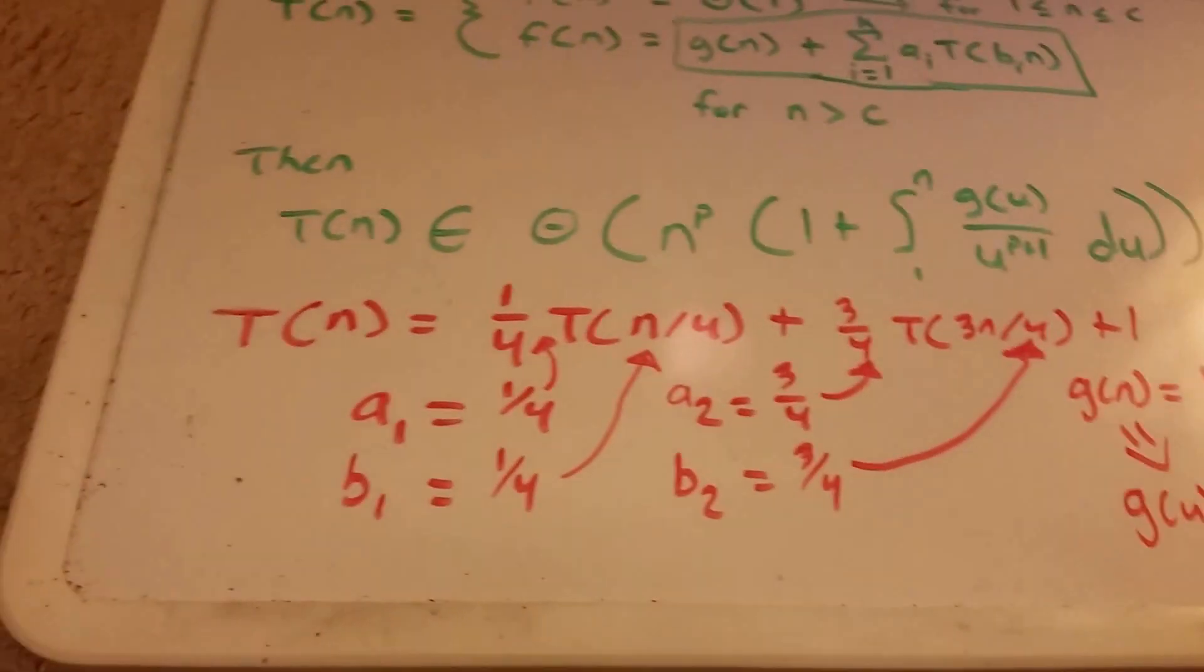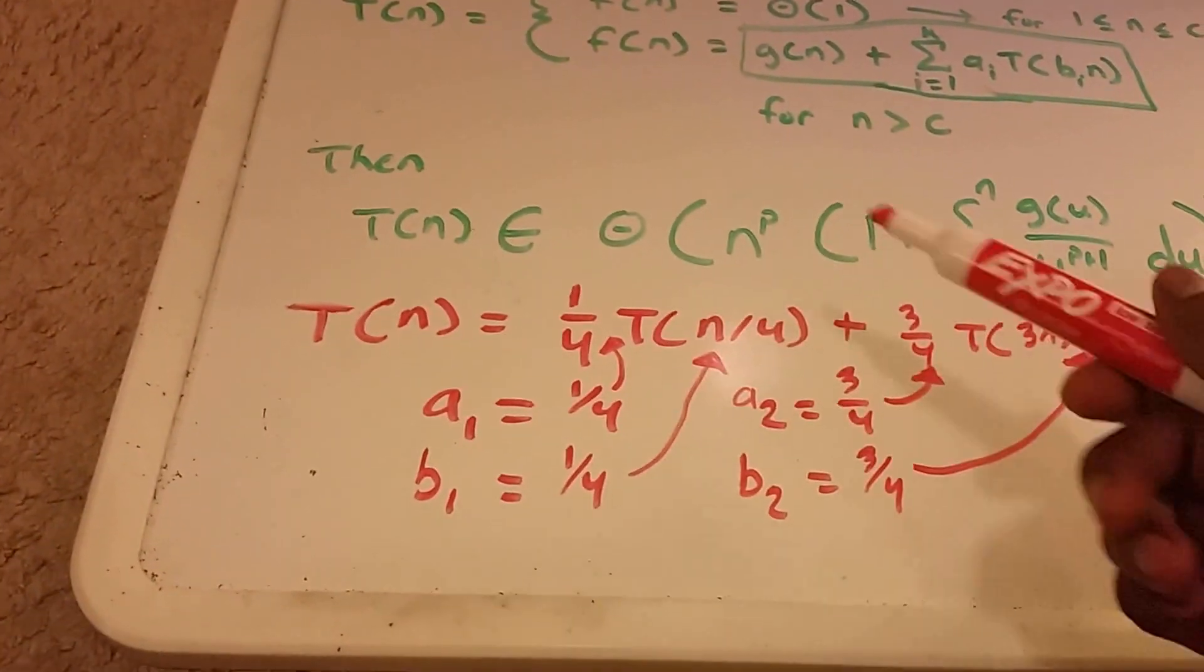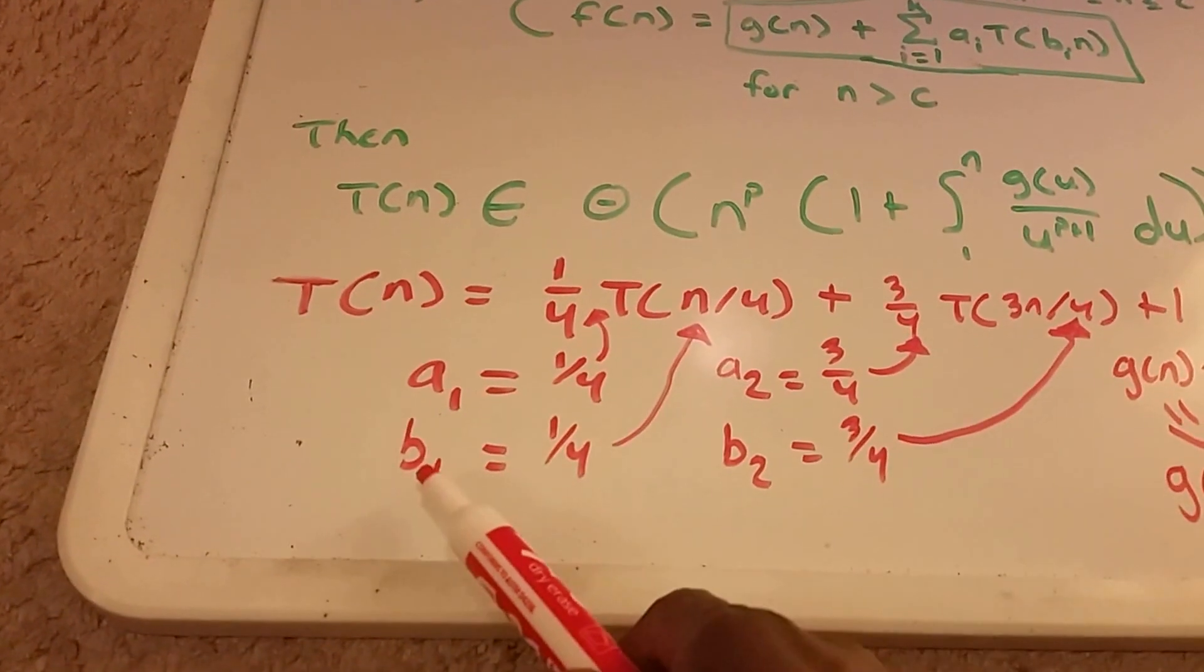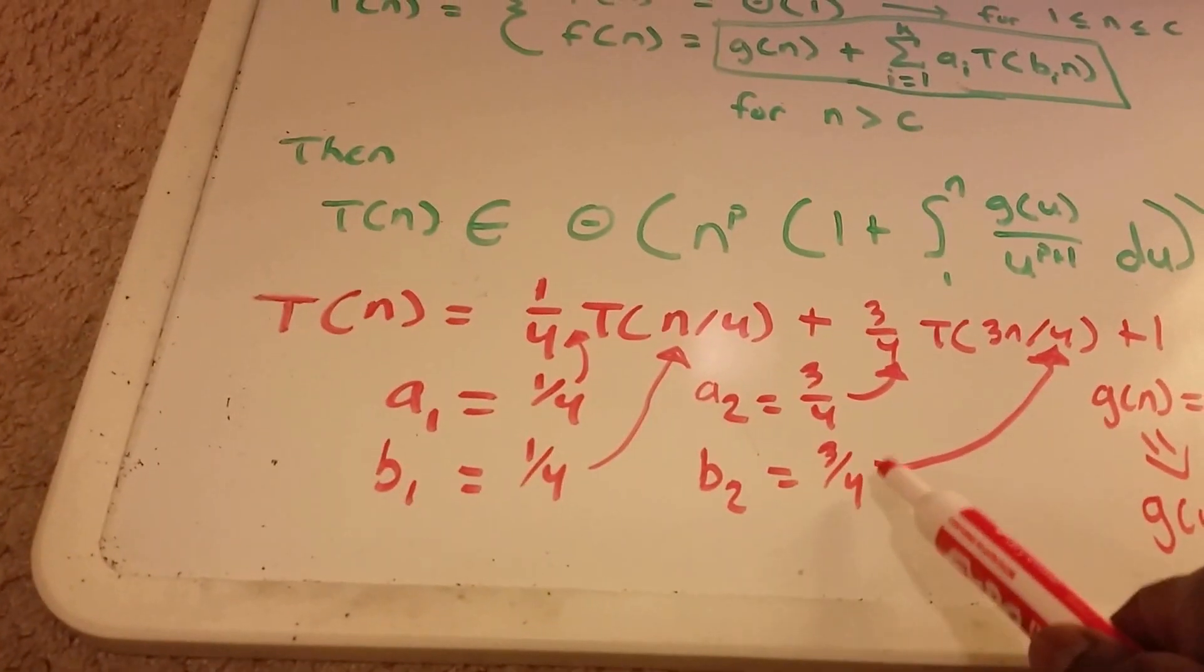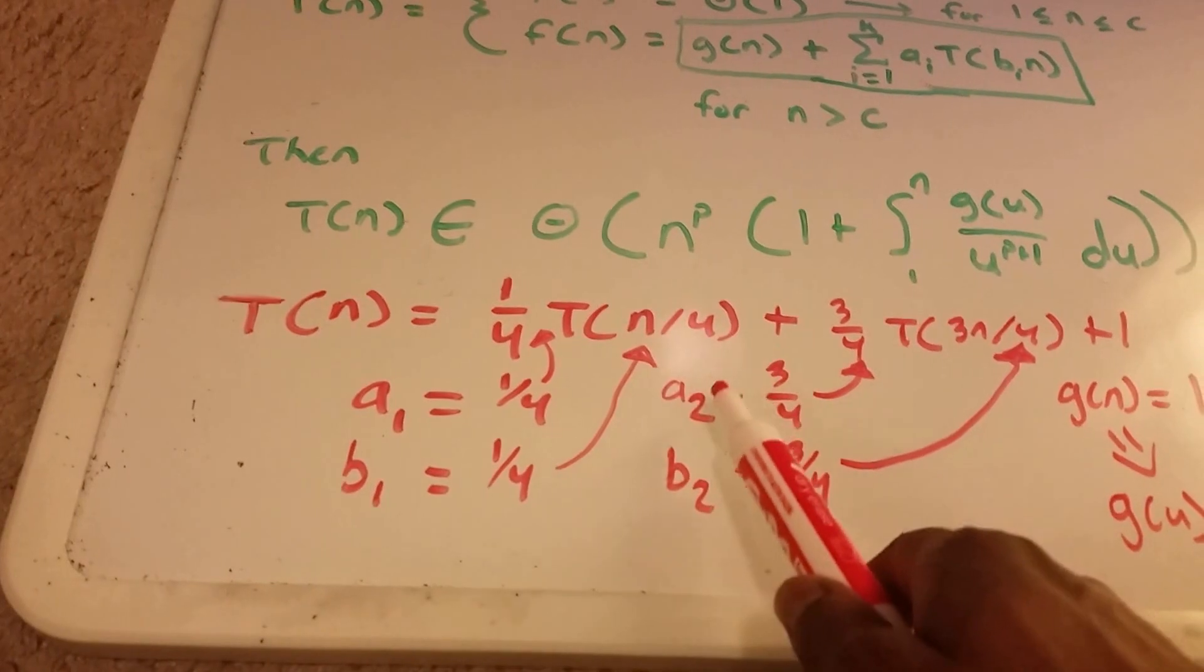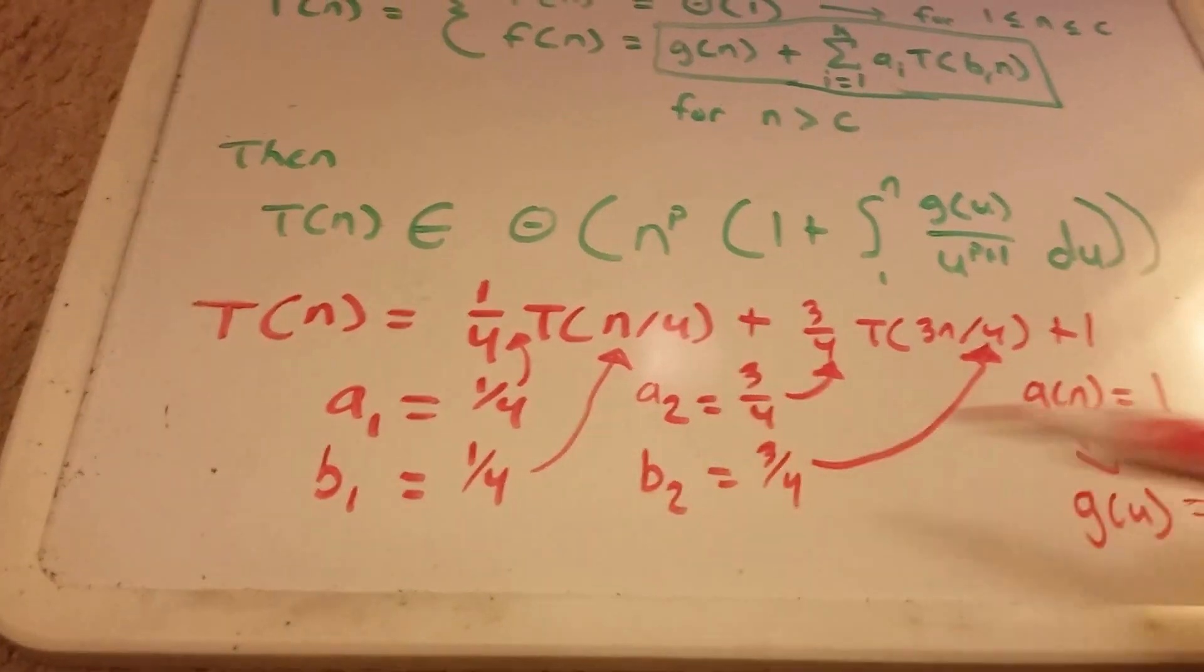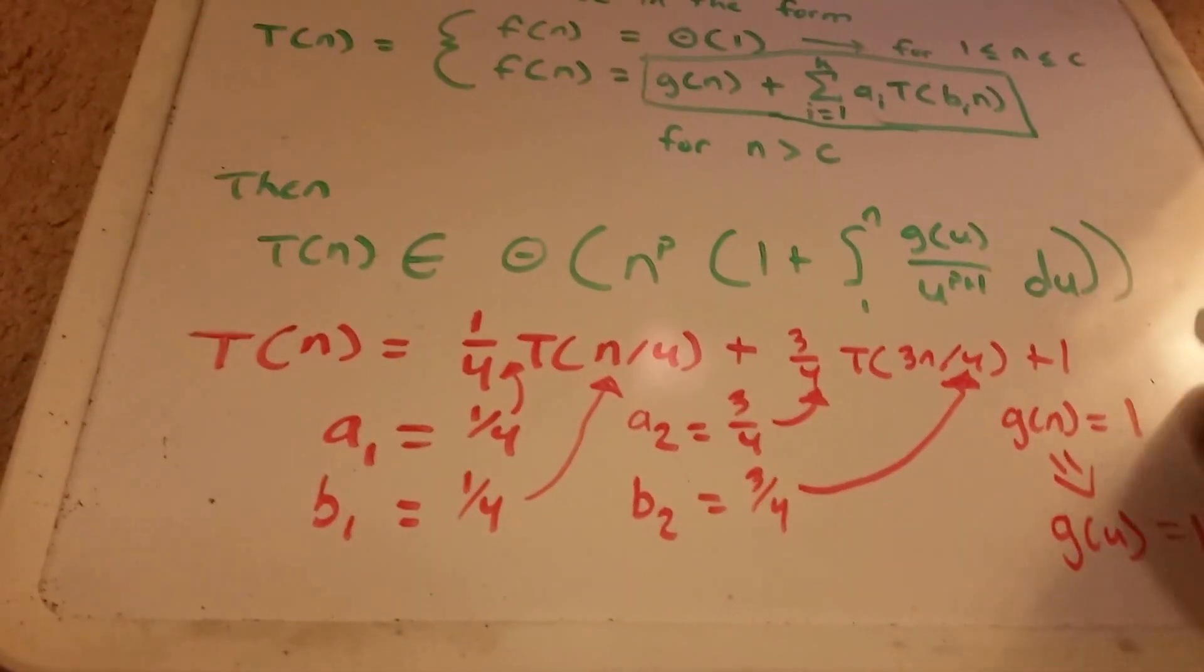Now, we make sure that all of our conditions are correct. And they are. Our b of 1 is between 0 and 1. Our b of 2 is between 0 and 1. Our a1 is greater than 0. And our a2 is greater than 0. So now we need to check our other condition.